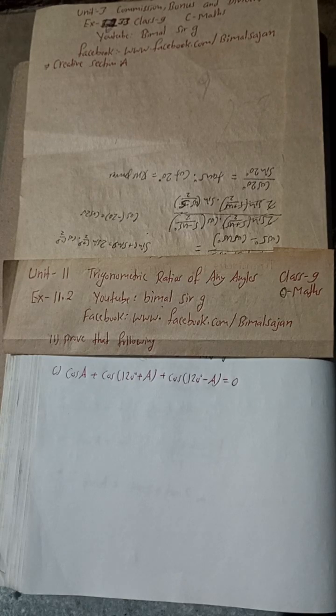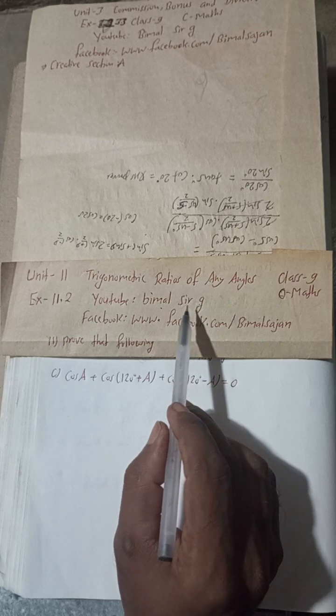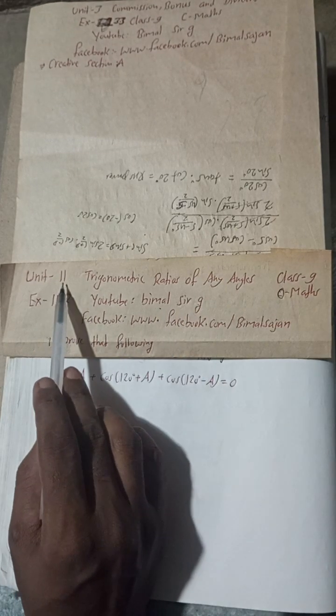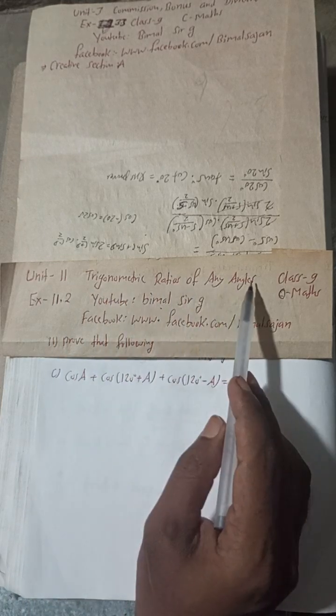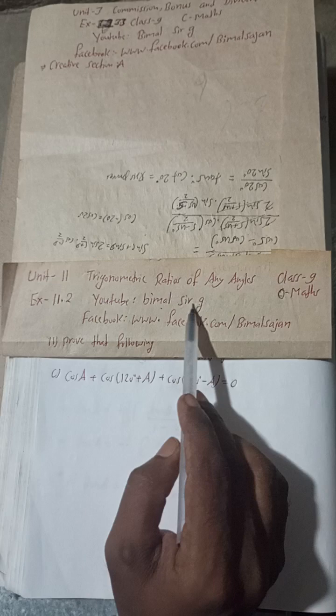Rade Rade, Jaya Sri Krishna. Class 9 and 10 students, welcome back to Vimal Sharjee YouTube channel. This is question number 11c of exercise 11.2 Unit 11 Trigonometric Ratio of Any Angles Class 9 Optional Maths. You can check this playlist.